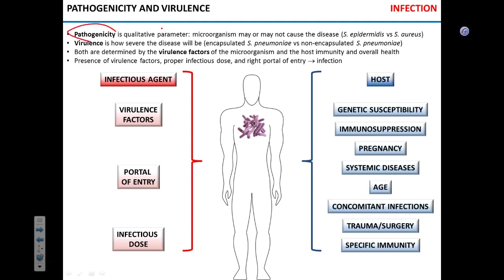Any infectious disease, any pathogen can be characterized by its pathogenicity and virulence — those are not essentially synonyms. Pathogenicity is a qualitative term which basically tells you whether the microorganism can or cannot cause disease in normal settings. For example, Staphylococcus epidermidis is non-pathogenic because normally it's a component of human skin microbiome and doesn't cause disease, while Staph aureus can cause disease and we call it a pathogenic microorganism.